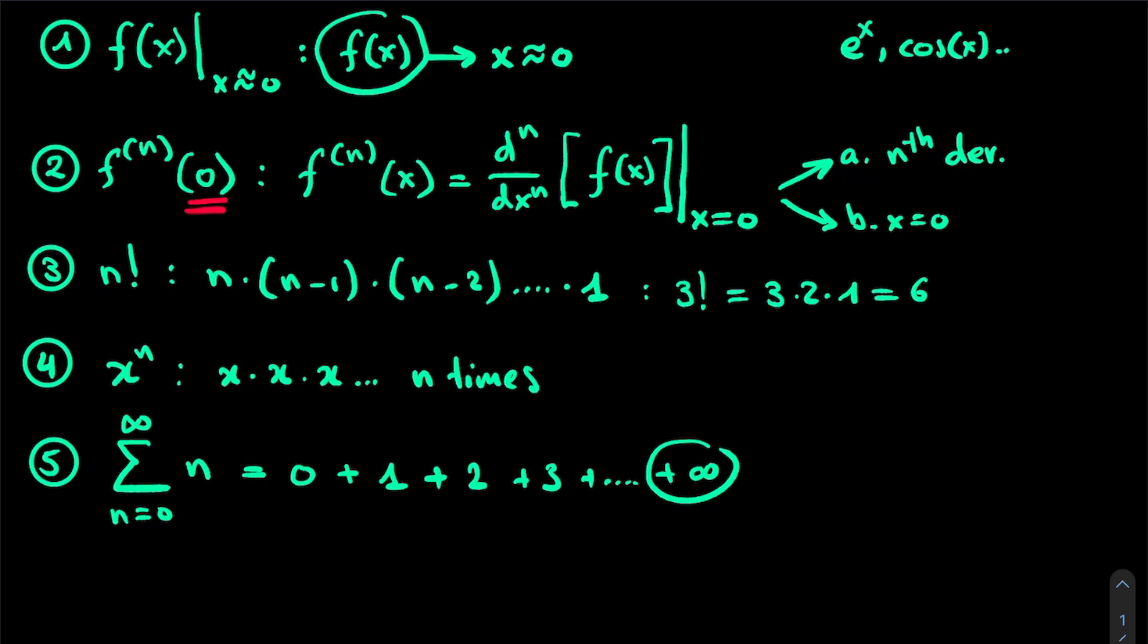So now we can bring all of this together. We have our f(x) filled in around x is roughly equal to 0. This will be our summation of n is equal to 0 to infinity. We take the nth derivative and we fill it in at 0. We divide this by n factorial and we multiply this with our polynomial term x to the power of n.